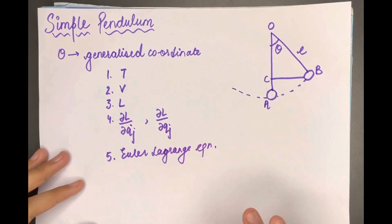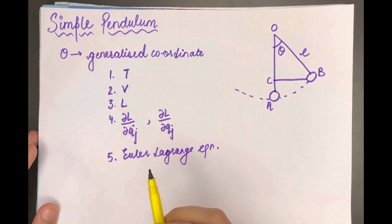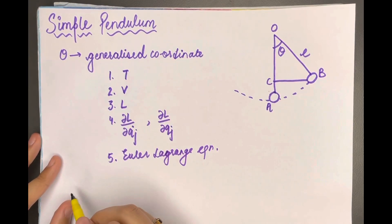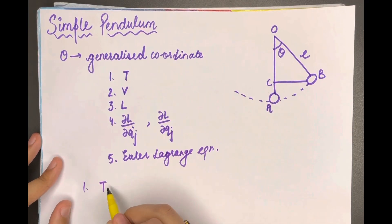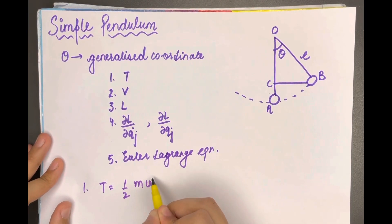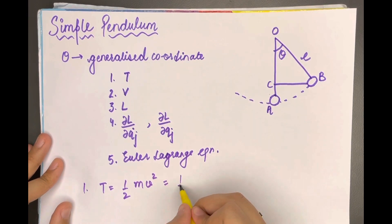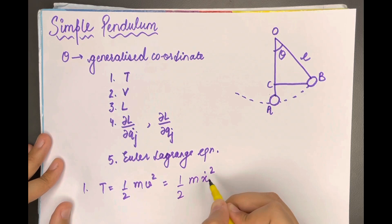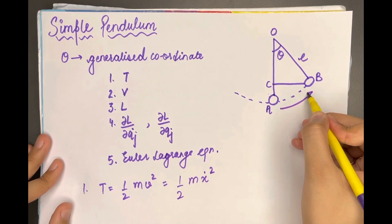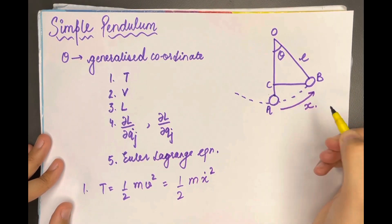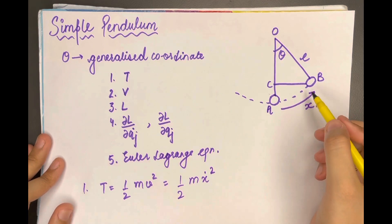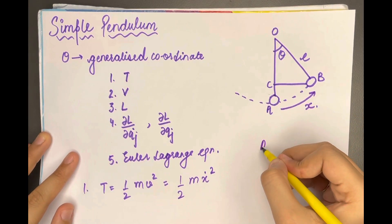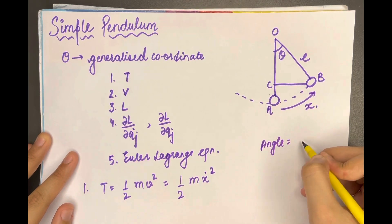Let us start with the first step: calculating kinetic energy. Kinetic energy T is equal to ½mv², or we can write ½mẋ² if x is our displacement. Now, how do we calculate the arc length? We know that angle equals arc length upon radius.